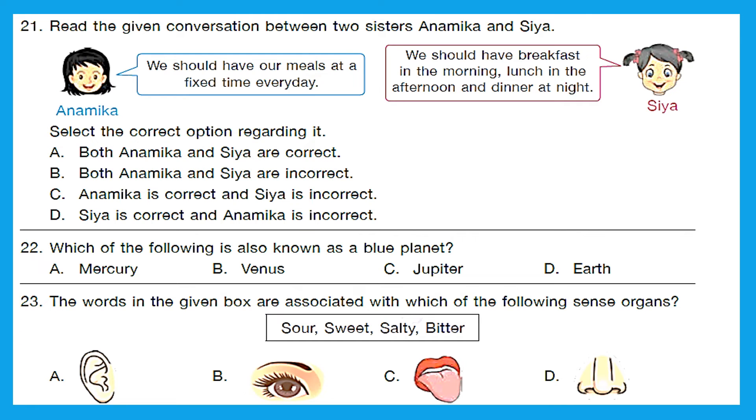Question 21. Read the given conversation between two sisters, Anamika and Sia. Anamika, we should have our meals at a fixed time every day. Sia, we should have breakfast in the morning, lunch in the afternoon and dinner at night. Select the correct option regarding it. Both Anamika and Sia are correct because we should have meals at fixed time every day and we should have breakfast in the morning, lunch in the afternoon and dinner at night. So option A, both Anamika and Sia are correct.